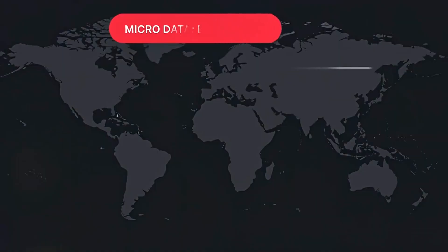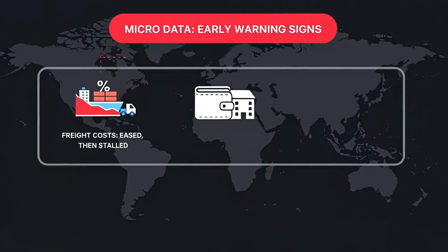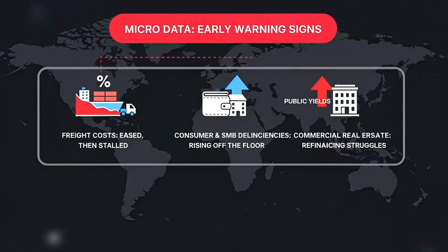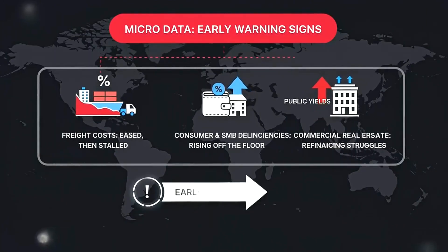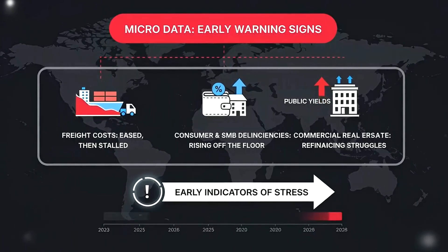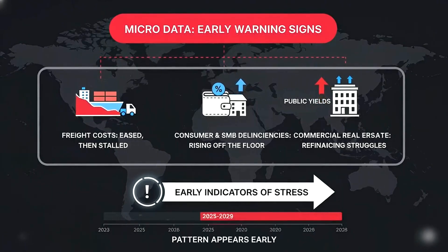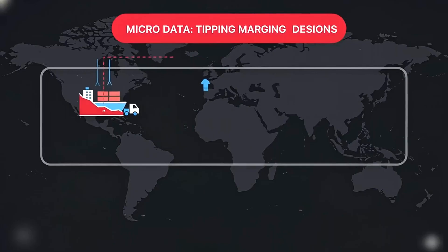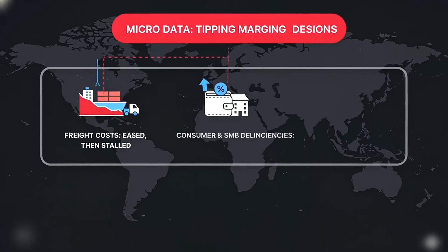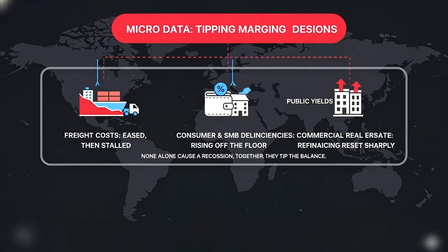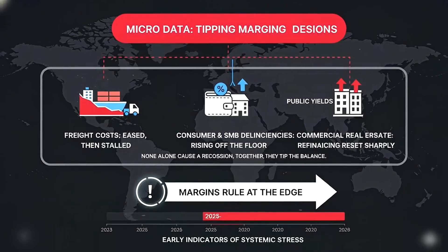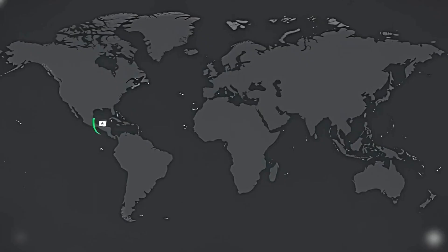The patterns showed up early in the micro data. Freight costs eased, then stalled. Delinquencies in certain consumer and small business buckets rose off the floor. Commercial real estate refinancing struggled where rates reset sharply. None alone cause a recession — together they tip marginal decisions. Margins rule at the edge. That's the setup. But what triggers the break?